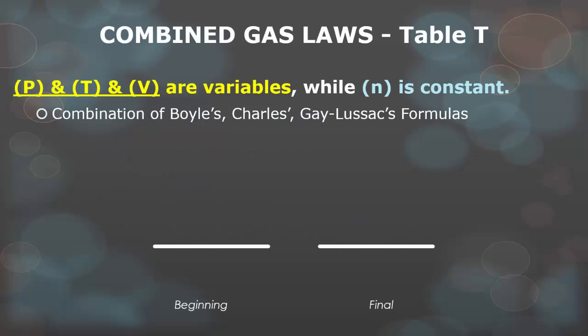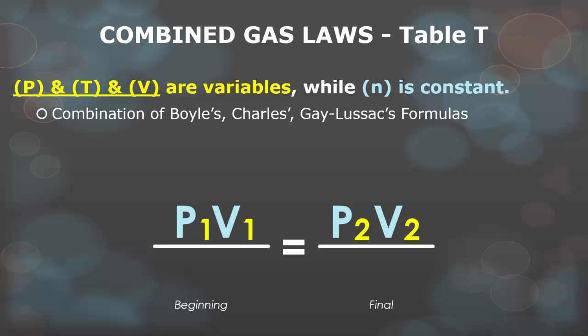The combined gas law, which is found on table T, involves pressure, temperature, and volume as variables. These are always going to be changing numbers. However, the number of moles is constant. It's a combination of Boyle's law, which is P1V1 equals P2V2.